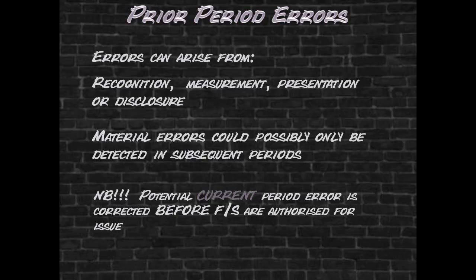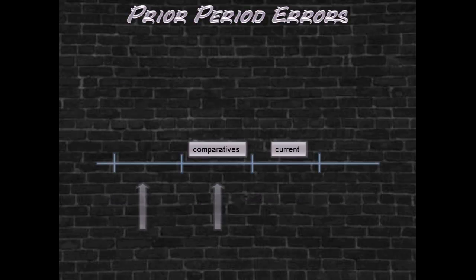Errors are usually corrected before the financial statements are authorized for issue. It could however happen that an error that occurred in one or more prior periods is only detected during the current financial year. If the error occurred in the comparative period, this period is retrospectively restated. If however the error occurred in a period prior to those presented, the opening balance of the earliest prior period presented is corrected, if practicable.